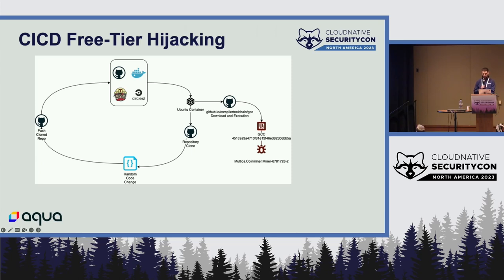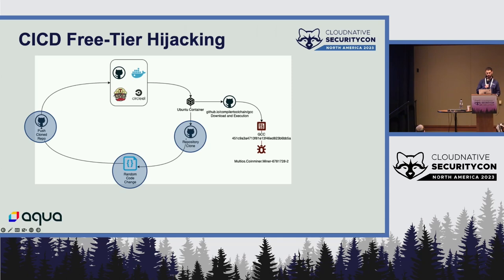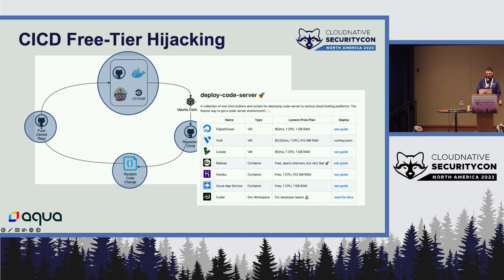How did they make it work at scale? On the build step, they first clone the repo, choose a random file and make a random change, then push that change back into the repository — which triggers another CI job, creating an infinite loop where every build triggers another build. After triggering the next build, they pull a custom-made miner from another repository and run it until the maximum allowed time of the CI offering. We even found a table in one of those bad actor repositories listing the free deals and limits of various CI/CD and SaaS services.